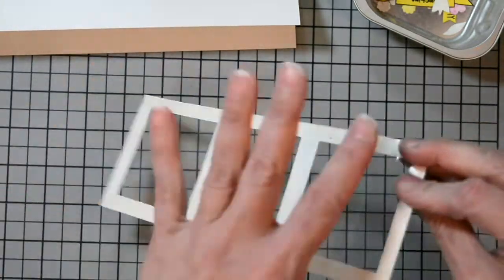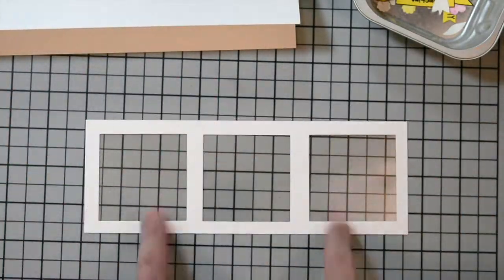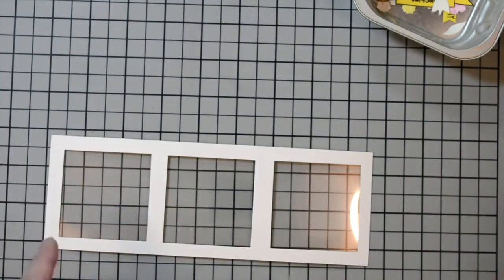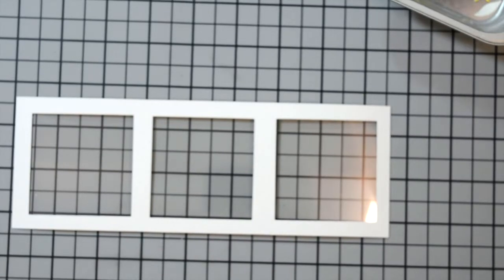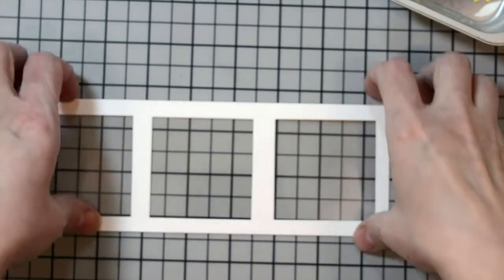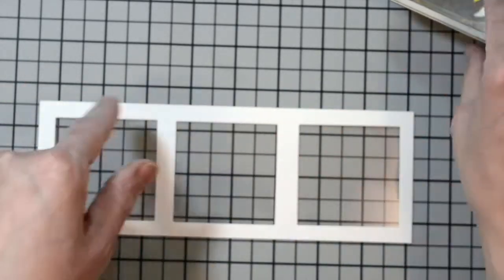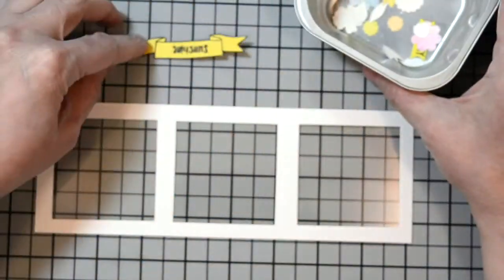For our card panel, which we're going to create for our shaker, I die cut three squares into a piece of a three by eight and a half panel. And then I added some acetate in the back. We're going to be adding some foam to the back of that.